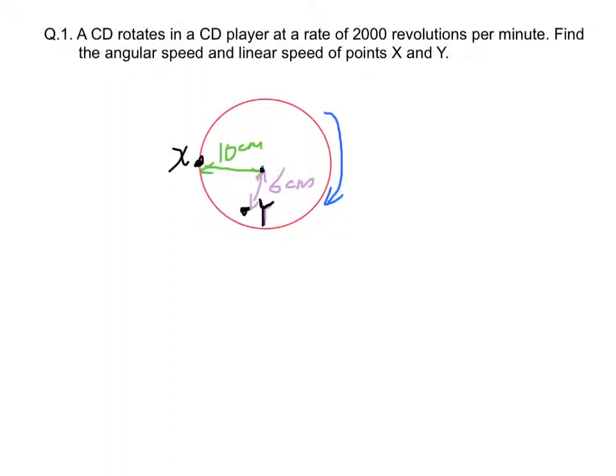Let's look at some questions about circular motion. Question 1: A CD rotates in a CD player at a rate of 2,000 revolutions per minute. Find the angular speed omega and the linear speed v of both points x and y.